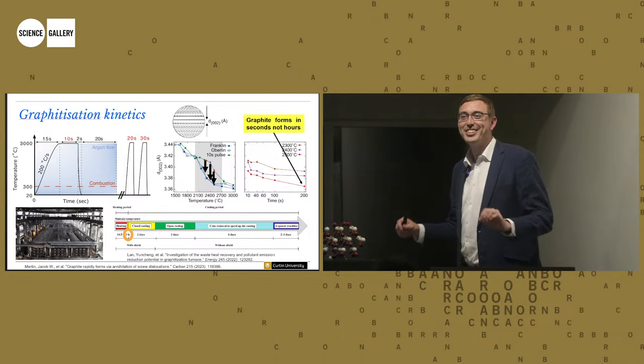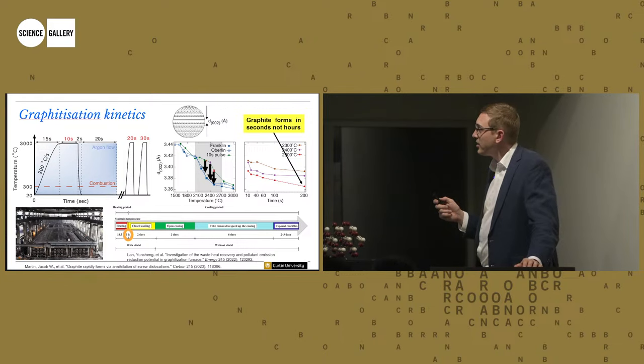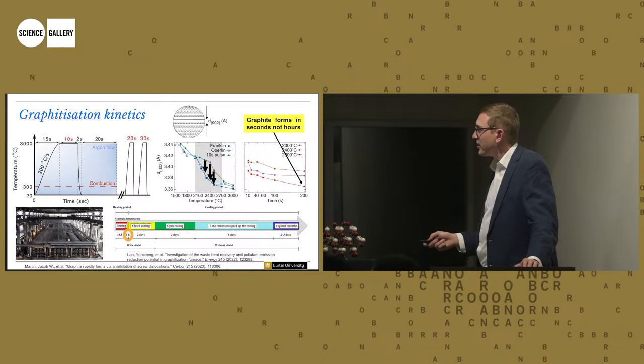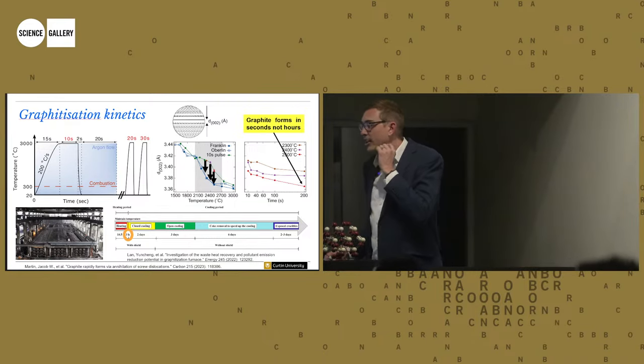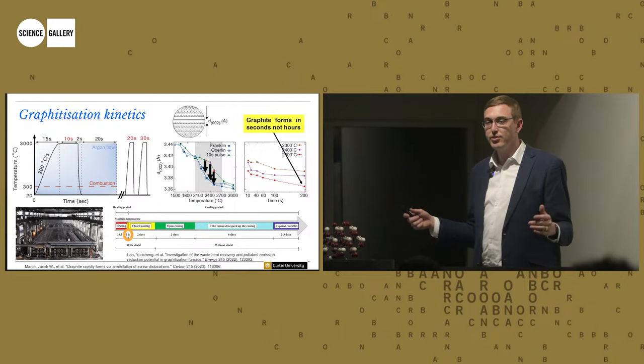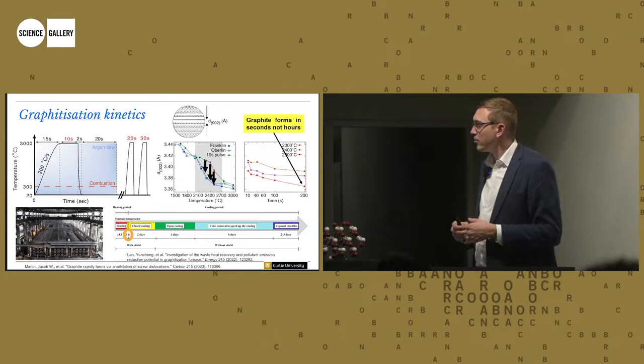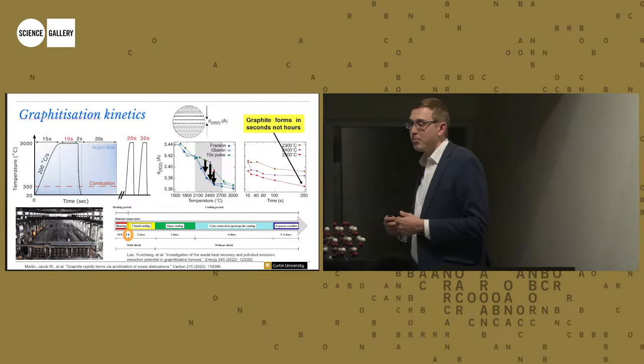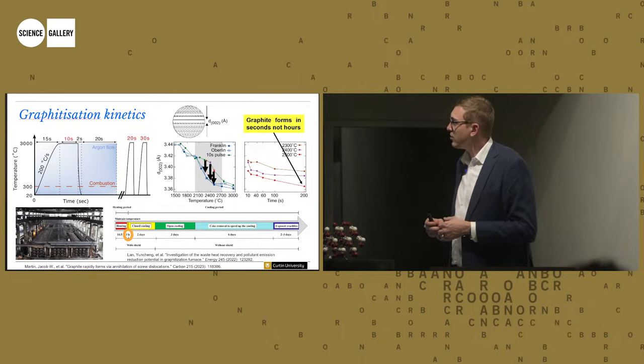So graphite forms in seconds, not hours. Why does that matter? If you're pumping energy into a ton scale furnace for three hours, to keep it at 3,000 degrees for three hours, you're overdoing it. And this is actually, we actually computed that the amount of energy that you need to form graphite is about 10 times less than how much is currently being used. And that's because of all the heat loss from the furnaces. So now that we know that graphite forms in this way, we're working now with companies to, and we've also developed our own company to work out whether we can speed up this process. So can we now make new furnaces using renewable energy? So fast, rapid heating of graphite to make graphite more cheaply.